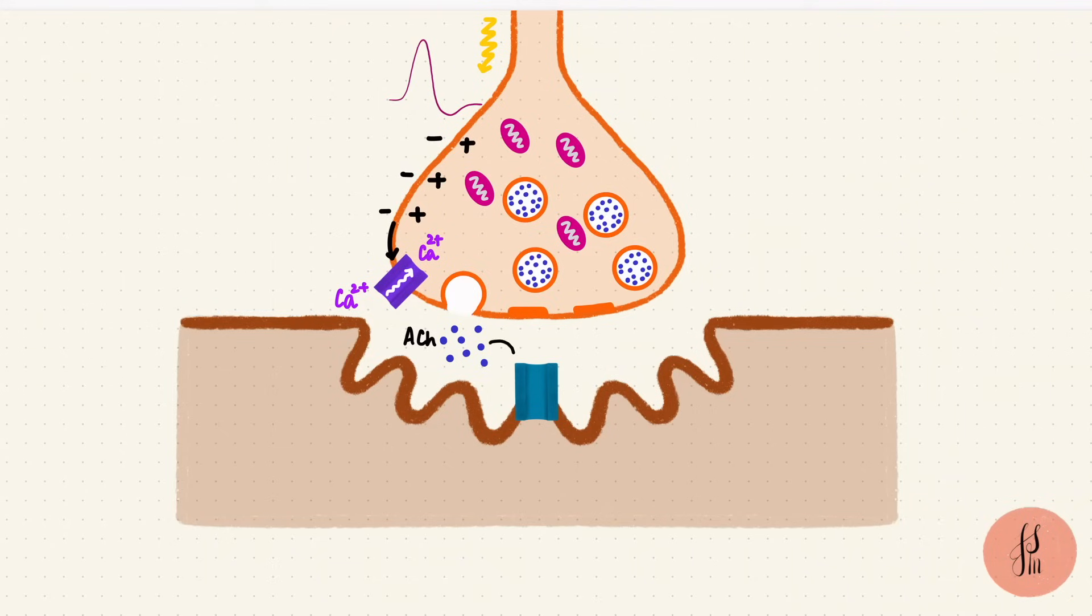Now once acetylcholine is in the synaptic space, what does it do? It binds to its receptor. When two molecules bind, the ligand-gated channel opens.